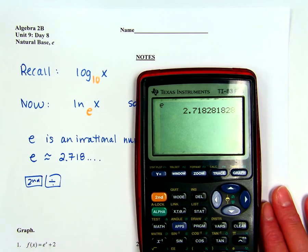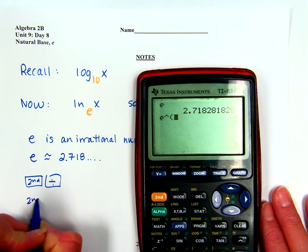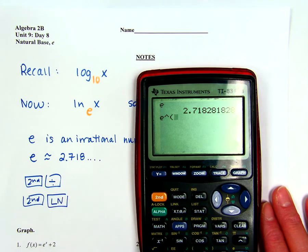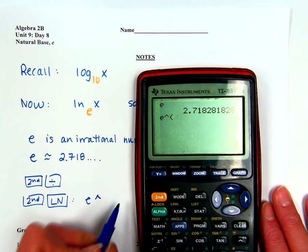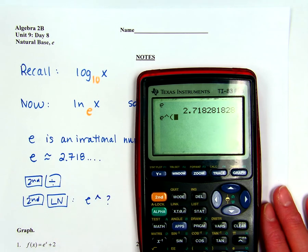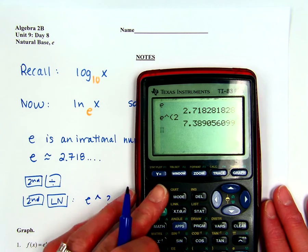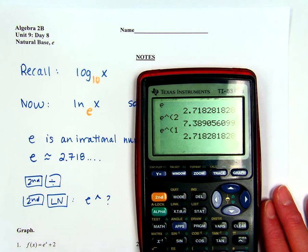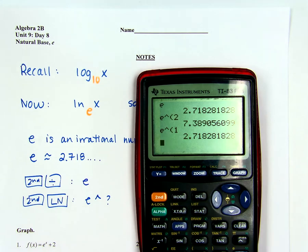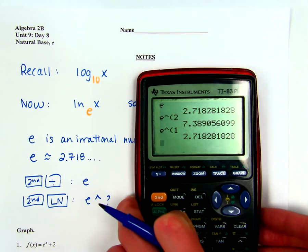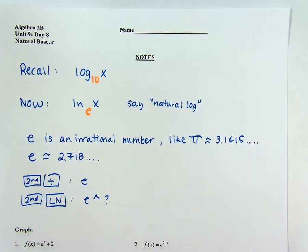The other place you can find E is if you hit Second and then Natural Log. That will actually set up for you to do E raised to some power, and then you can put in whatever power — E to the second power, E to the first power, and so on. We're going to do a whole bunch of different problems involving E and go through more details as we get to those problems.